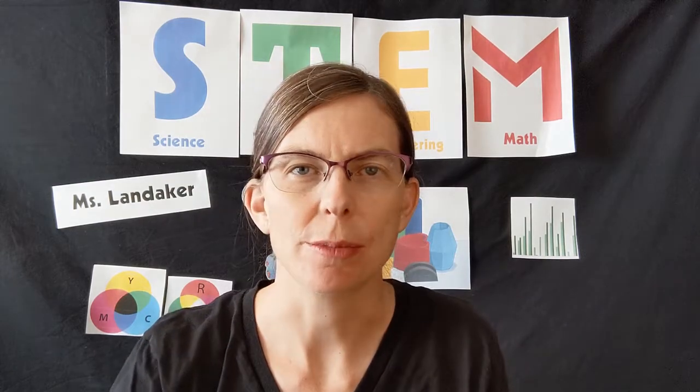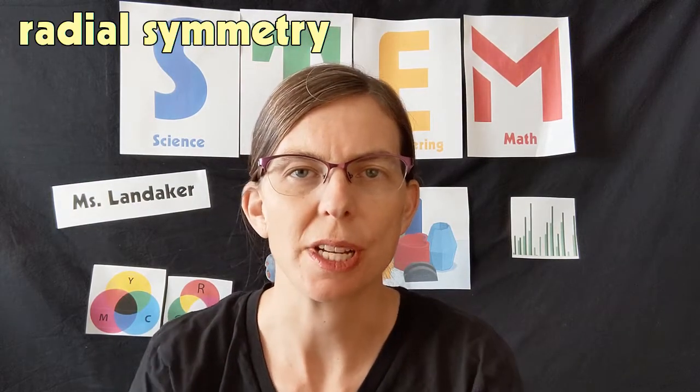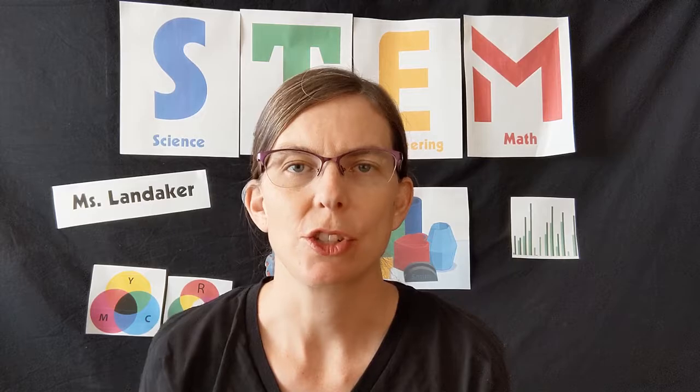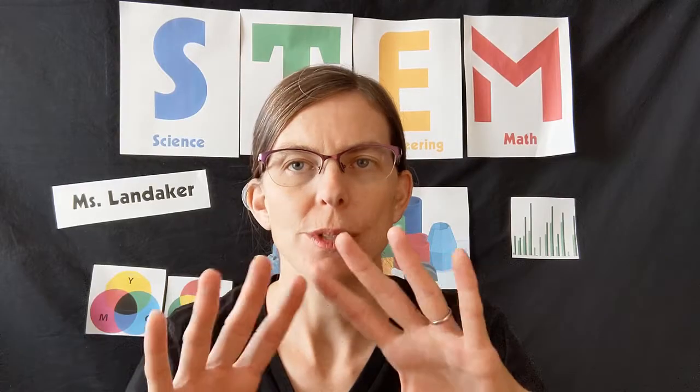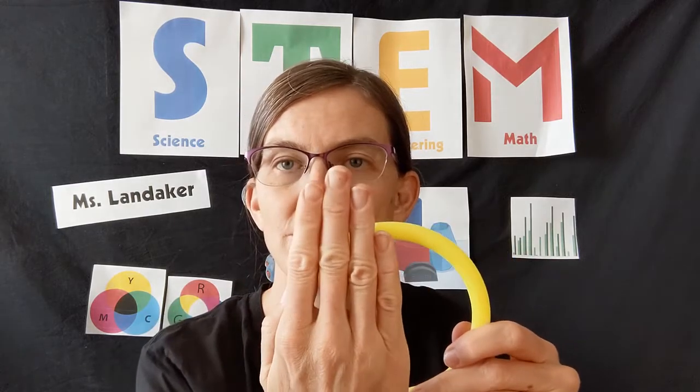This brings us to another type of symmetry called radial symmetry. Radial is related to the words radius and radiate which both have to do with circles. A circle has radial symmetry because you can rotate it and it stays the same. It also has regular symmetry because we can divide it in half and it's the same on both sides.